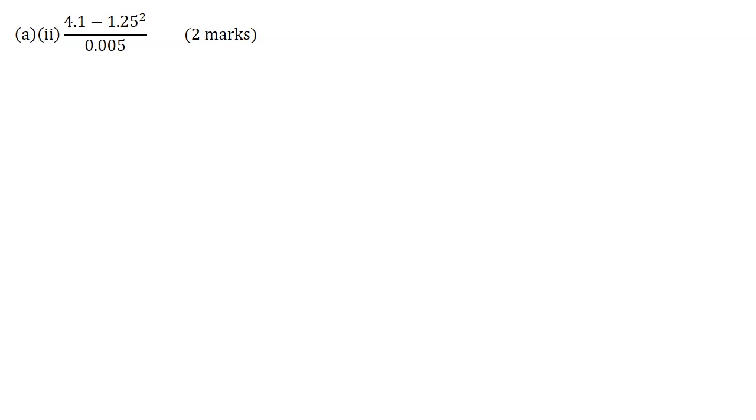Part 2: 4.1 minus 1.25 squared divided by 0.005 for two marks. Now, the first thing you need to note here is that you need to work out this entire numerator before you could divide by 0.005. And you can perform all of this on your calculator by just typing this entire problem with the numerator in brackets. And when you press equal, you will get here 507.5.